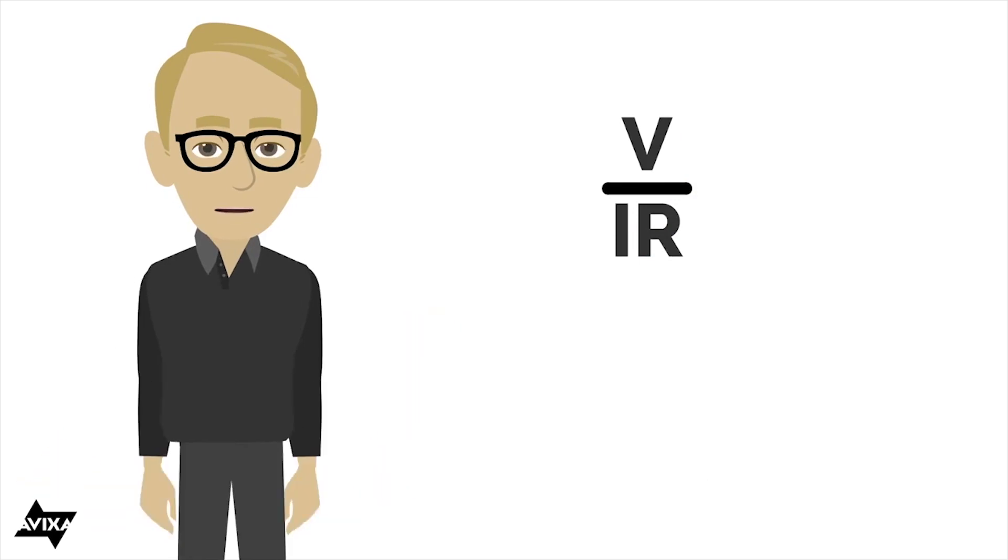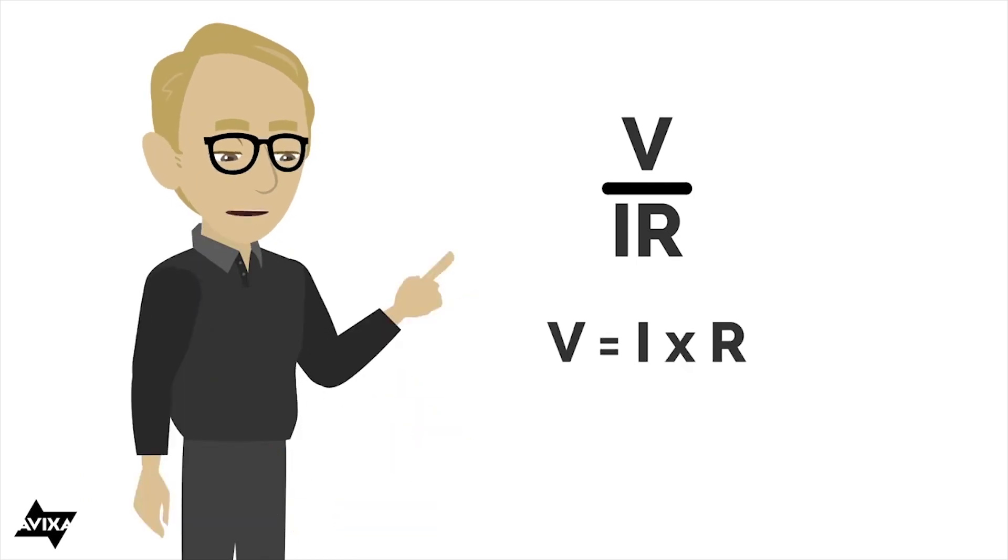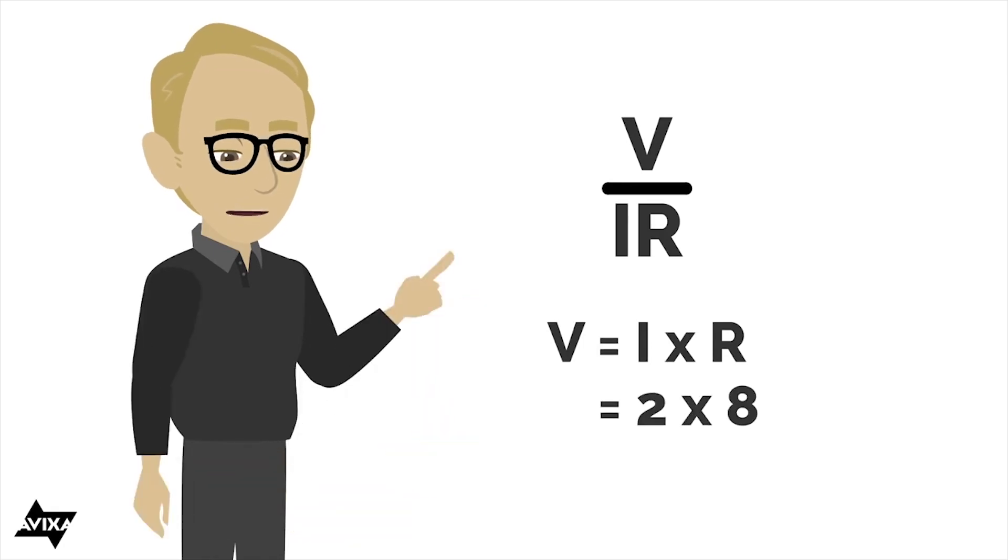Let's do three quick little examples here. Let's say I want to solve for voltage. So voltage equals I times R. And the current, the I, is going to be 2 amperes worth of current and 8 ohms worth of resistance. That's going to give me 16 volts.